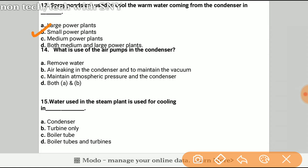Question 14: What is the use of air pump in the condenser? The answer will be B, air leakage in the condenser and to maintain the vacuum. We are only focusing on the answers. Question 15: What water used in steam plants is used for cooling in? The answer will be A, condenser.